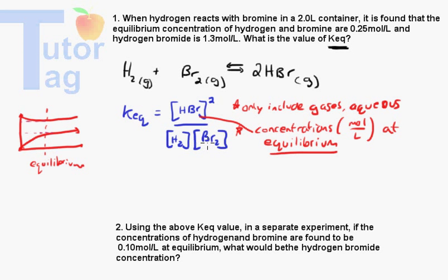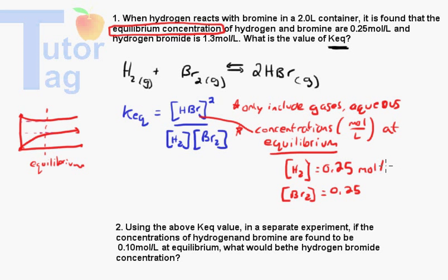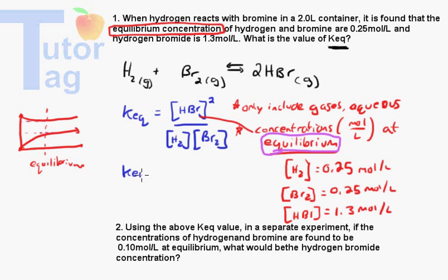Now we can use this reaction and equation to answer the first question. Hydrogen reacts with bromine in a 2-liter container. The question states that the equilibrium concentrations of hydrogen and bromine are 0.25 moles per liter each — so the concentration of H2 equals 0.25 mol/L and the concentration of Br2 equals 0.25 mol/L. The concentration of HBr equals 1.3 moles per liter. Those are the equilibrium concentrations.